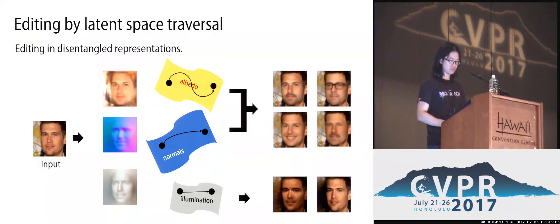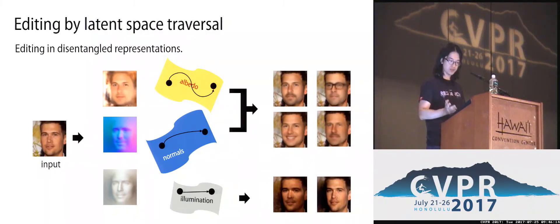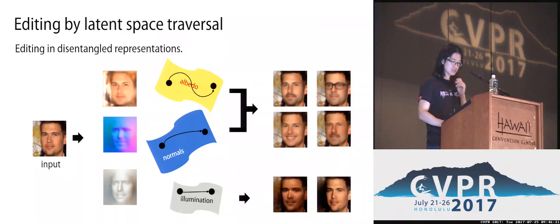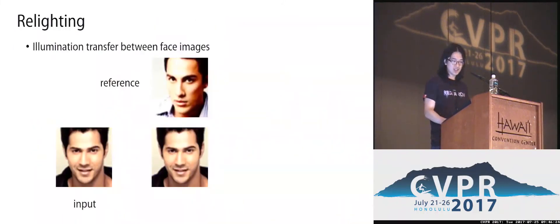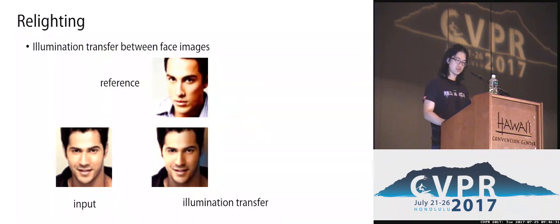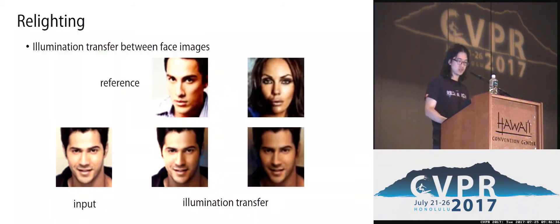Our network disentangles the image into separate latent spaces for albedo, normal, and lighting. We can traverse each of the manifolds separately or in combinations to define various image editing operations. Our network is also unique in allowing the user to directly manipulate the illumination of the face. For example, we can transfer the lighting of a reference face to the input face by simply replacing the lighting coefficients of the input image with those of the reference image.